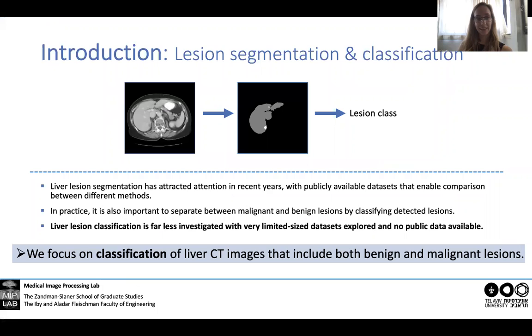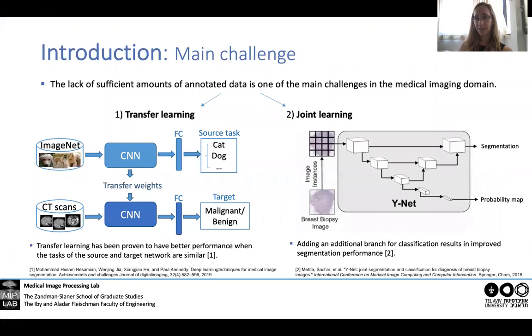In this work, we focus on classification of liver CT images that include both benign and malignant lesions, and we do that by using both transfer learning and joint learning, which help us overcome the lack of sufficient amounts of annotated data.